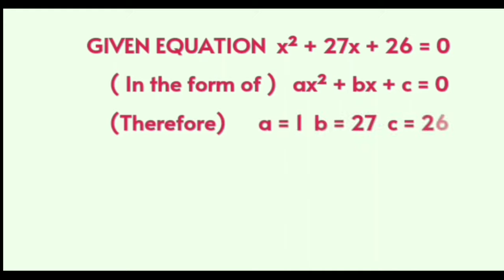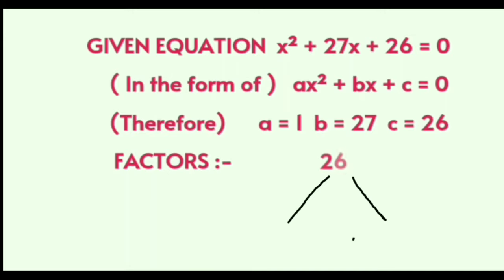In our case, a is equal to 1, b is equal to 27, and c is equal to 26. In any quadratic equation solved by factorization method, the first thing is to find the factors of the c term such that on adding or subtracting these factors, we get b. The factors of 26 are 26 times 1, and adding them gives us 27, which is the middle term.